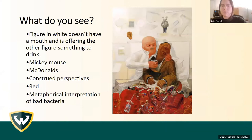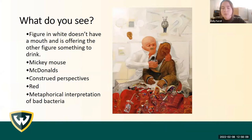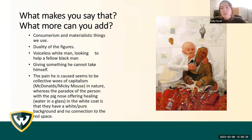Some responses received while looking at the Barcelona image began with literal descriptions — the Mickey Mouse ears, the McDonald's cup, the colors. We also looked at the differences between the figures. As we asked them to explain why they saw what they saw and what more they could add, we got into consumerism, materialistic concepts, and the duality of the figures. A more developed narrative was constructed around the image.